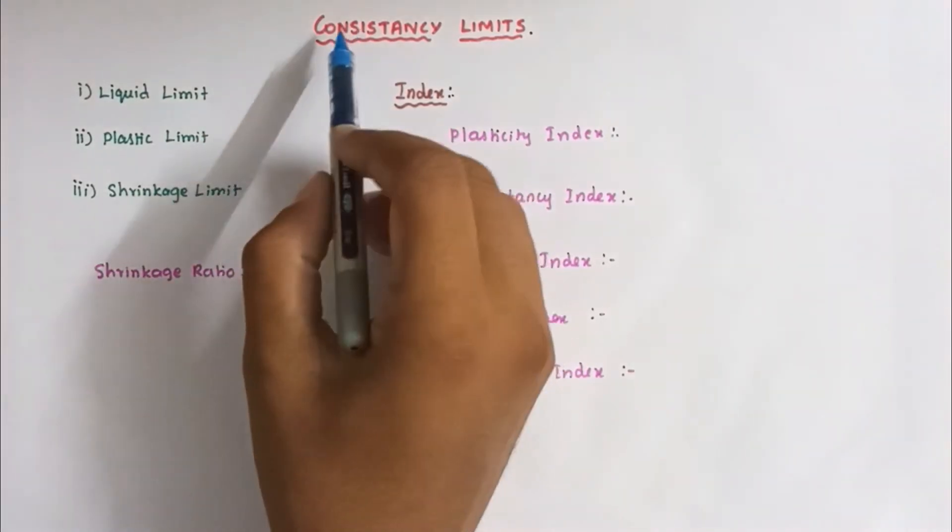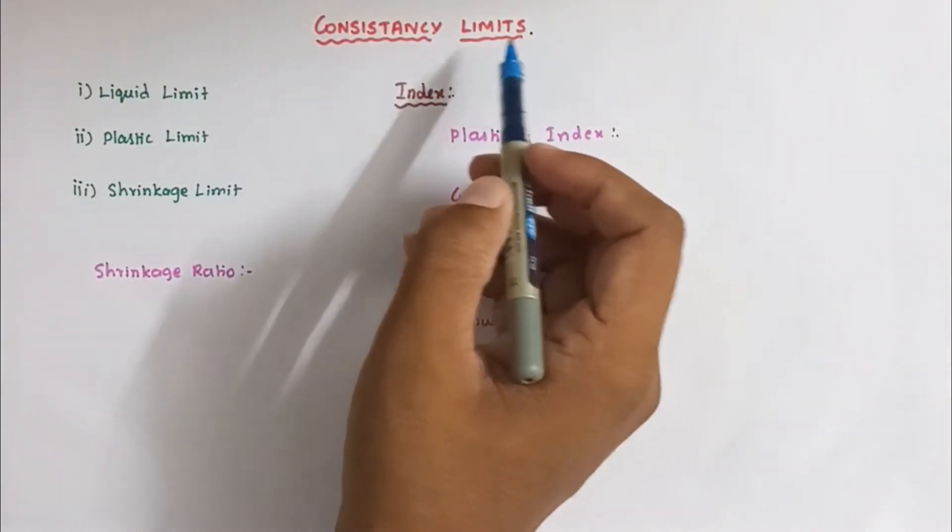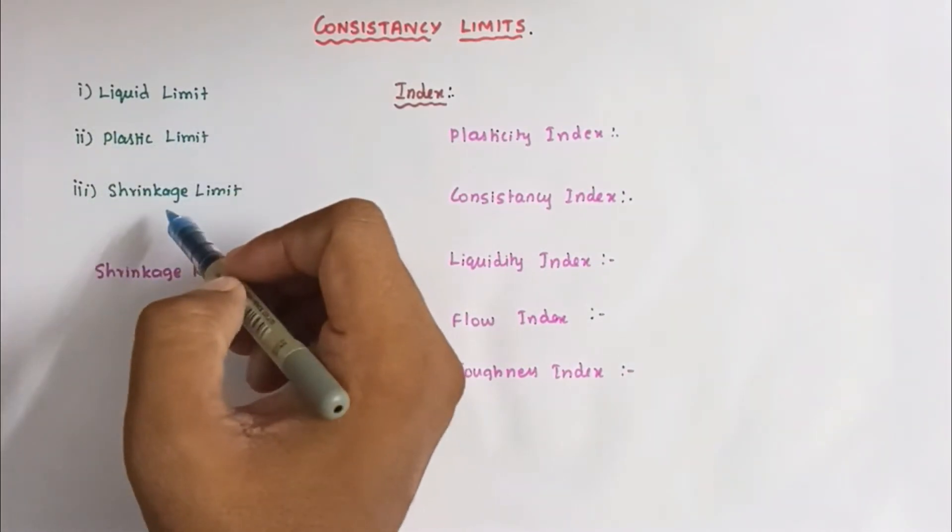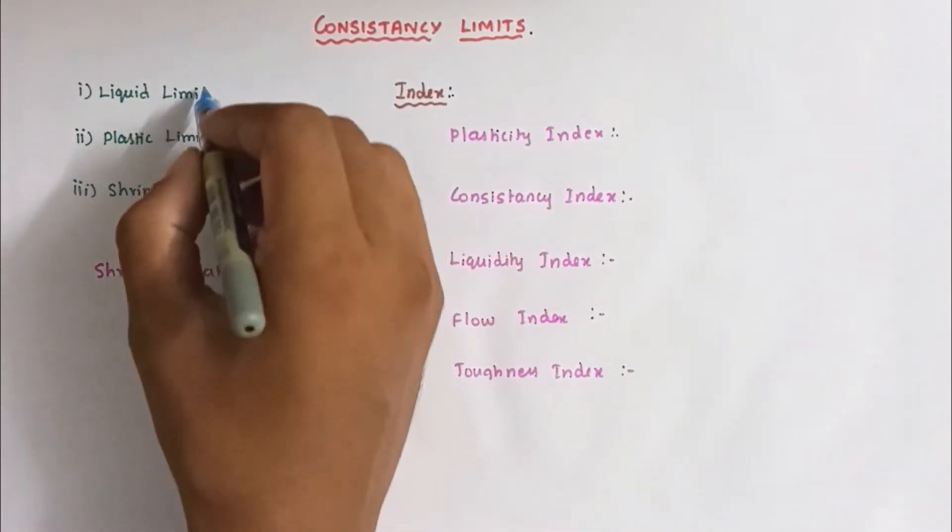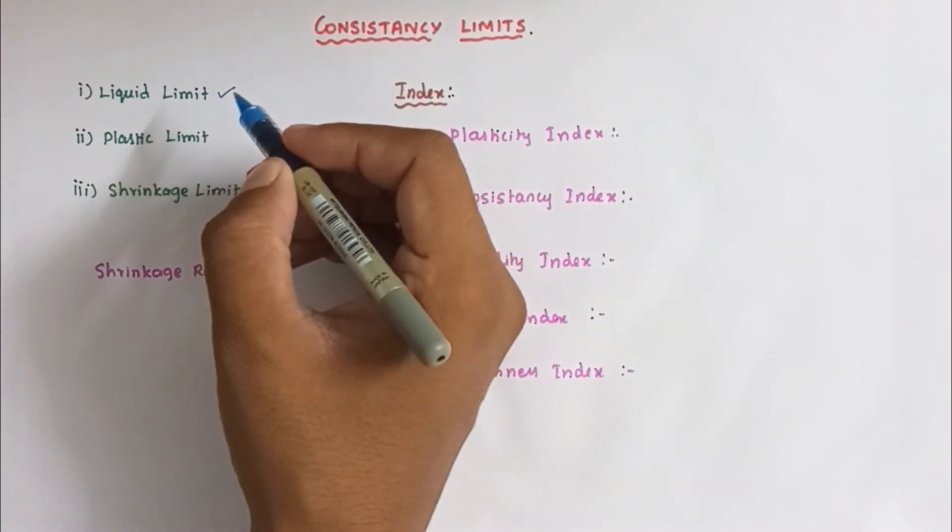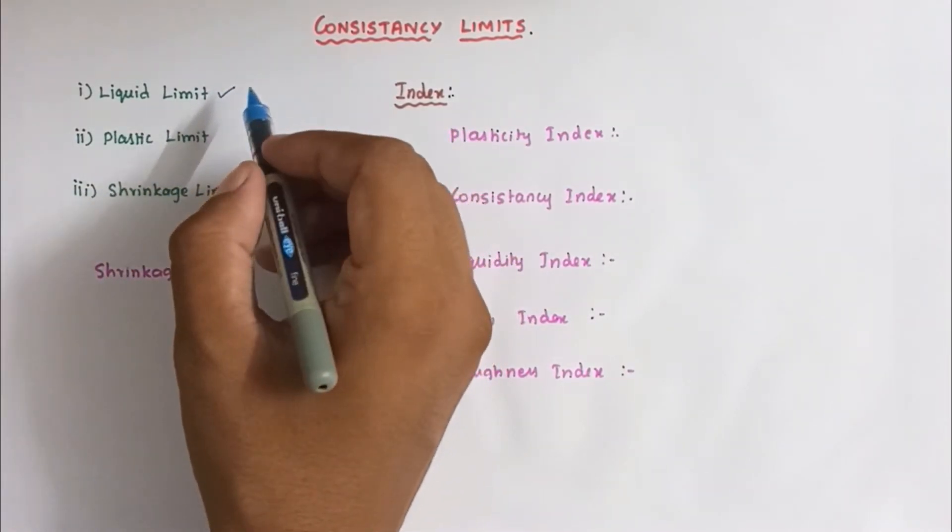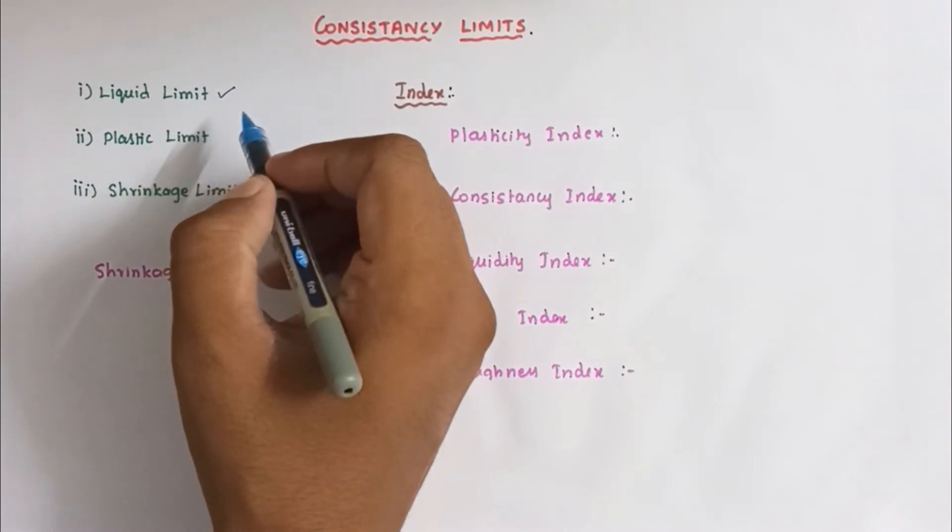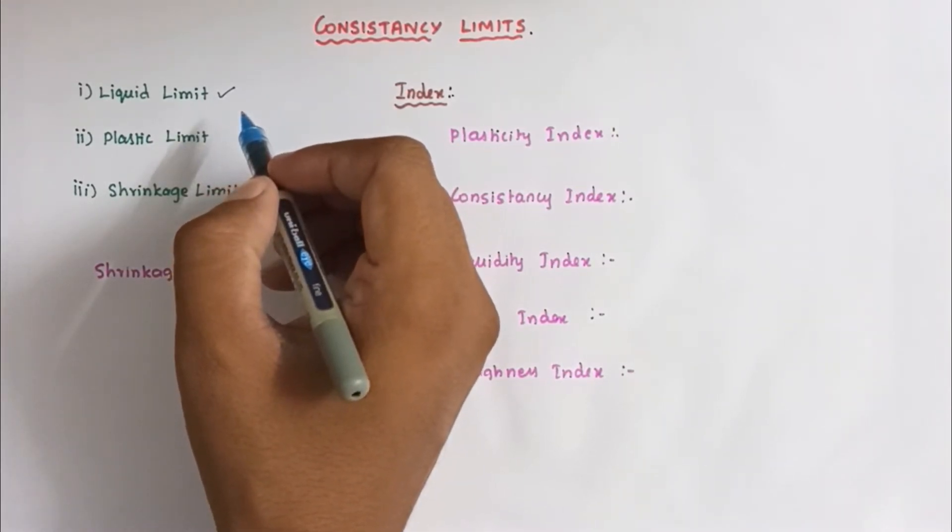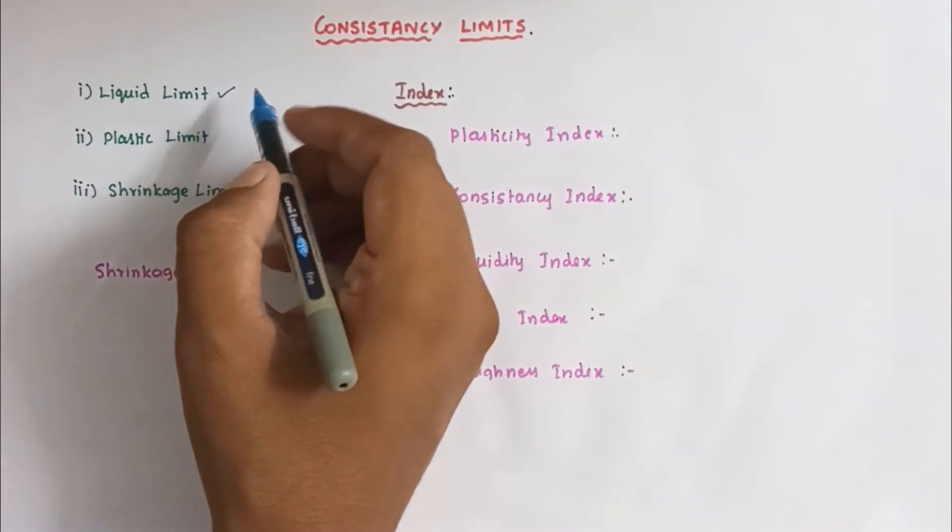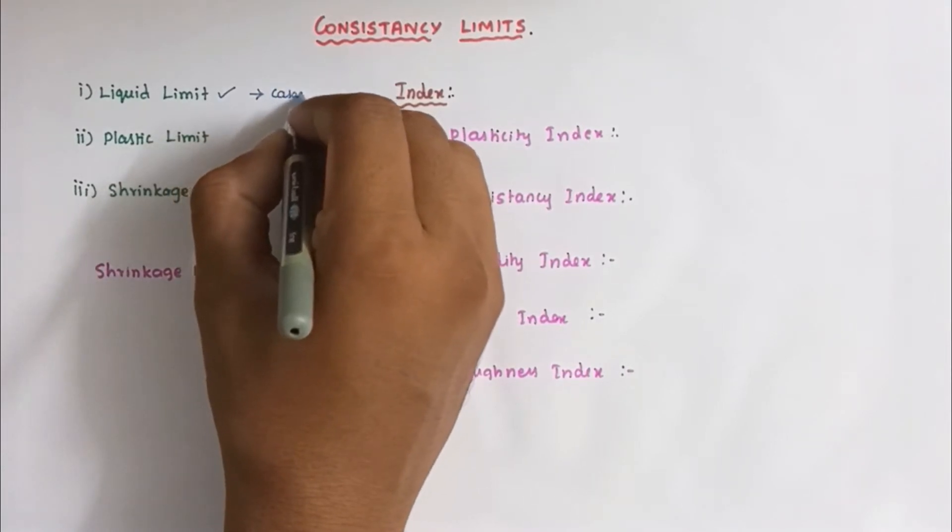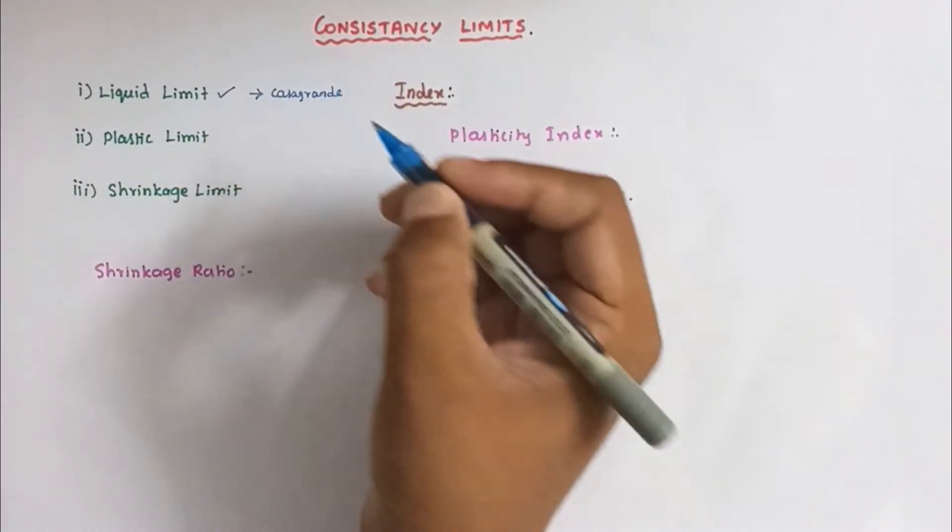Hello friends, today we're going to see the consistency limits of soil. There are three types of consistency limits: liquid limit, plastic limit, and shrinkage limit. First, liquid limit. It is a minimum water content where the soil still acts as a liquid and has some shearing resistance. The lowest water content at which the soil is in the liquid state is called liquid limit.